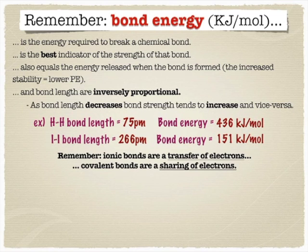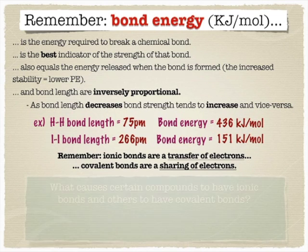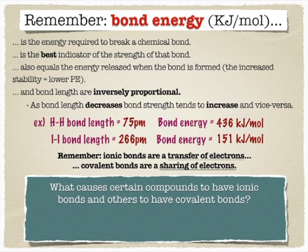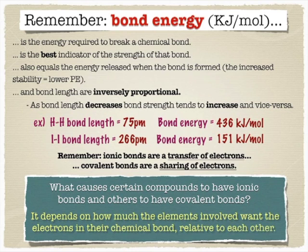We've talked about what makes something ionic versus covalent — ionic being a transfer of electrons, covalent being a sharing. We've always said metals and non-metals like to make ionic bonds, and non-metals and non-metals like to make covalent bonds. But that's always been wishy-washy and qualitative. There is a way to quantitatively decide whether something's going to be ionic or covalent, and that really depends on how badly the individual elements want electrons — and that's really what electronegativity is.